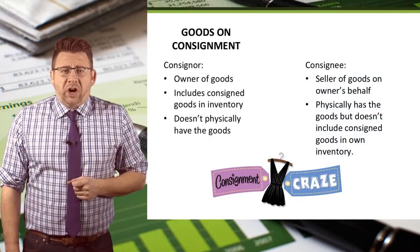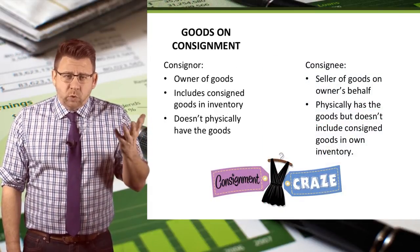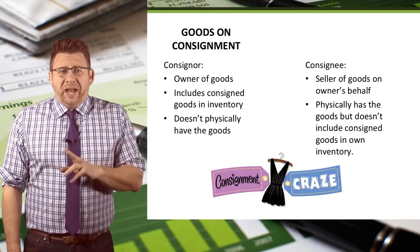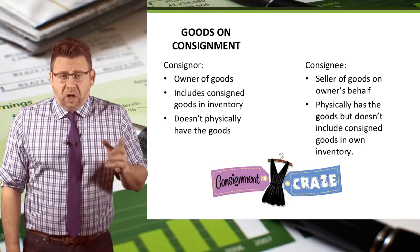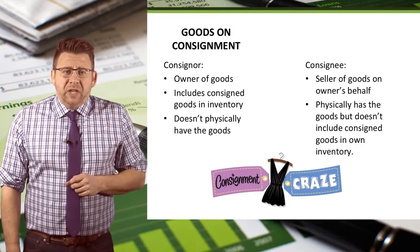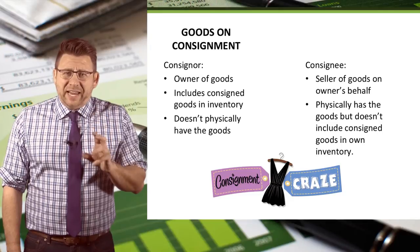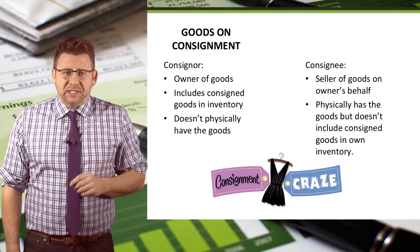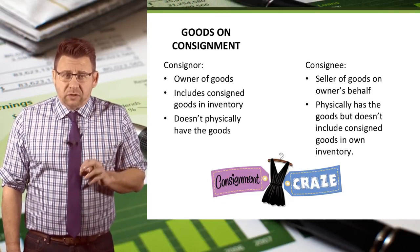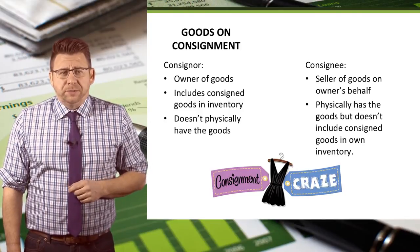Consignment goods are inventory items owned by one party, called the consignor, and sold by another, called the consignee. In the case of consignment, even though the physical goods are at the consignee's business, the goods belong to the consignor and should be included in the consignor's inventory count.